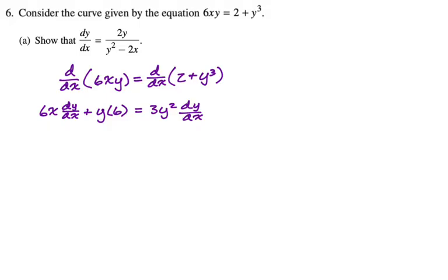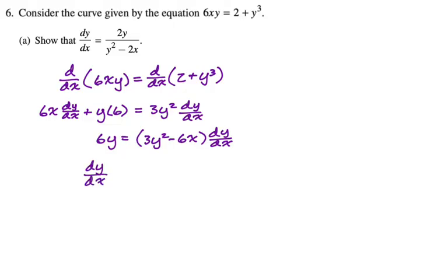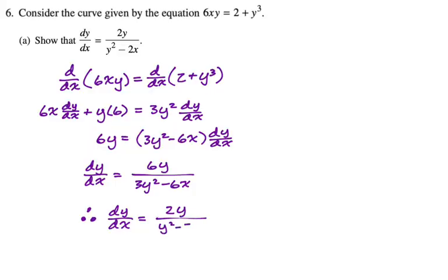We've got to rearrange this and solve for dy/dx. I'm going to bring everything with a dy/dx over to the right-hand side, keeping the positive 6y on the left. Dividing both sides by the coefficient of dy/dx gives dy/dx equals 6y over 3y squared minus 6x. Dividing everything by 3 gives dy/dx equals 2y over y squared minus 2x, as required.